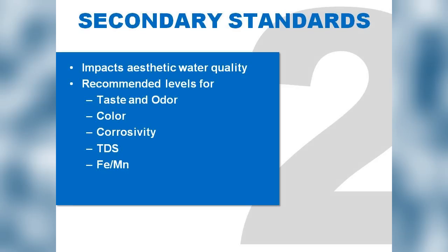We also have secondary standards that impact the aesthetic quality of water — things like taste and odor, color, corrosivity, total dissolved solids, iron and manganese. Public water systems are not required to meet these standards; they can choose whether or not to do so. EPA suggests levels or concentrations in the secondary standards list, and the public water supply governing body decides whether to comply.